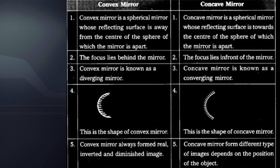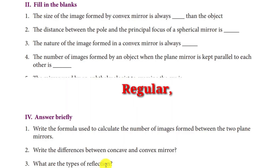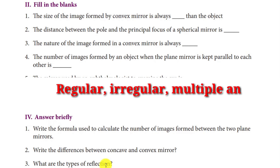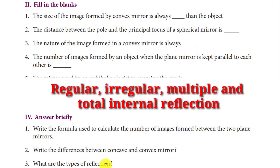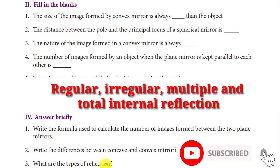A convex mirror always forms virtual, erect, and diminished images. A concave mirror forms different types of images depending on the position of the object. What are the types of reflection? Reflection is of many types: regular reflection, irregular reflection, multiple reflection, and total internal reflection.